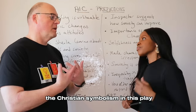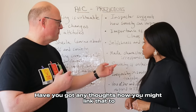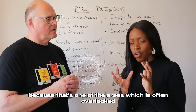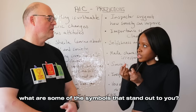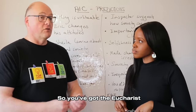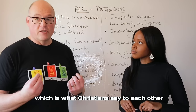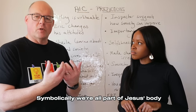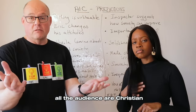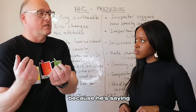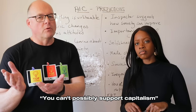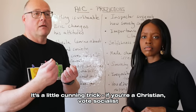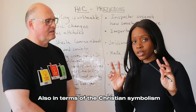One area often overlooked is the Christian symbolism in this play. There's the Eucharist — the idea of members of one body — which is what Christians say to each other when sharing communion. Priestley draws on this because his audience were largely Christian, and he's saying: if you're Christians, you can't possibly support capitalism because it's not a Christian way of behaving, so you have to be socialist. It's a cunning trick — if you're Christian, vote socialist, there is no choice.